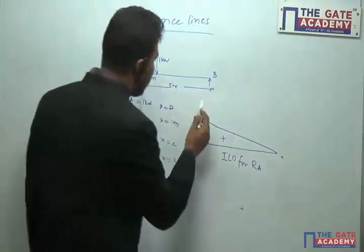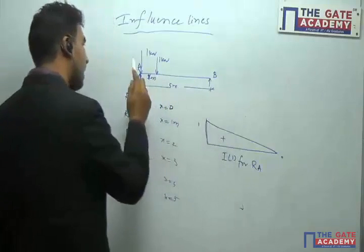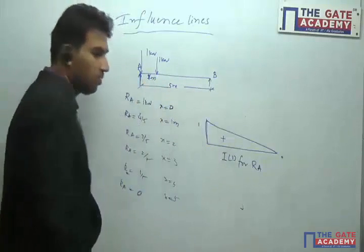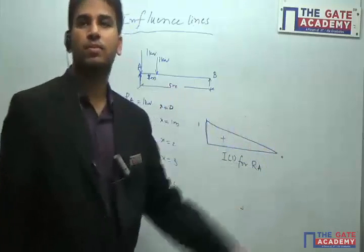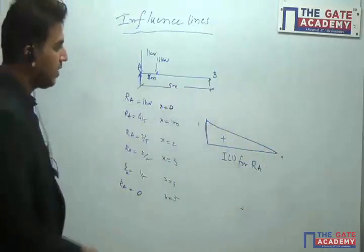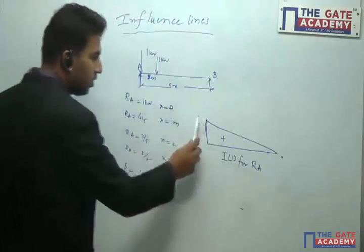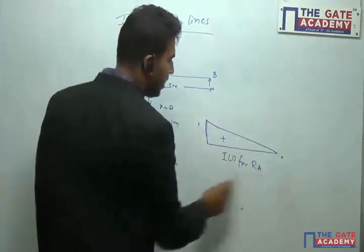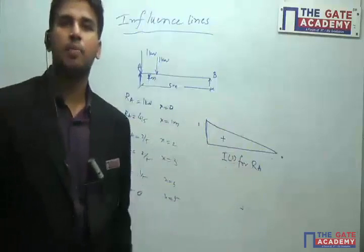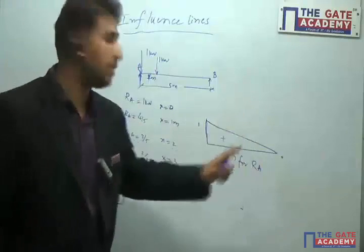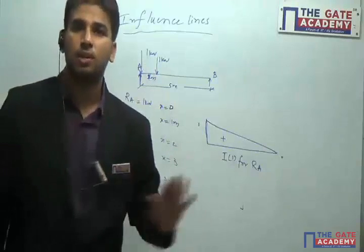A 1 kilonewton load is being moved from end A to end B. The variation of this unit load from one end to the other is given by this diagram, and this diagram is the influence line diagram for the reaction at A at the support.